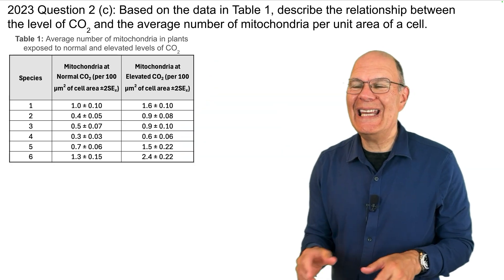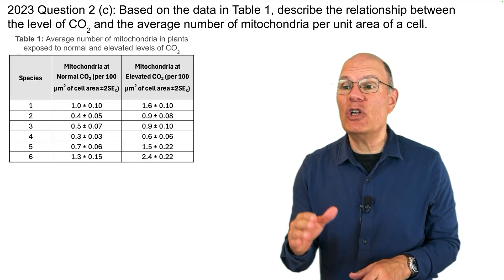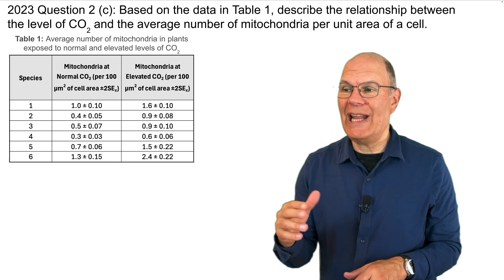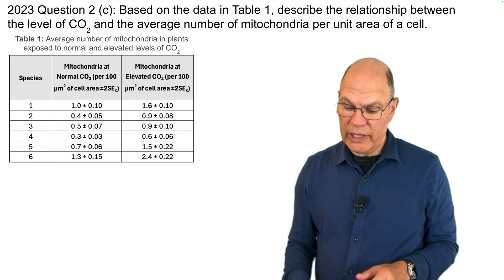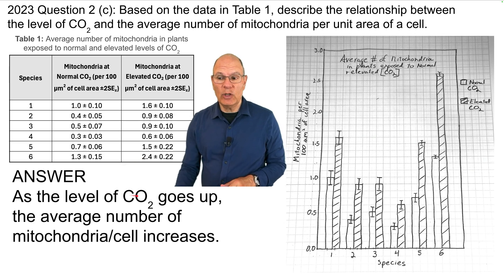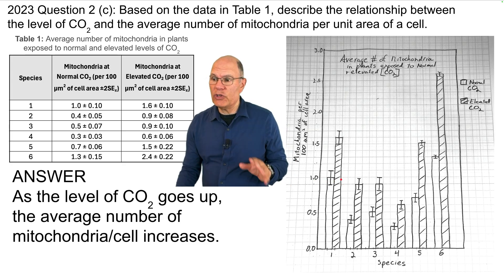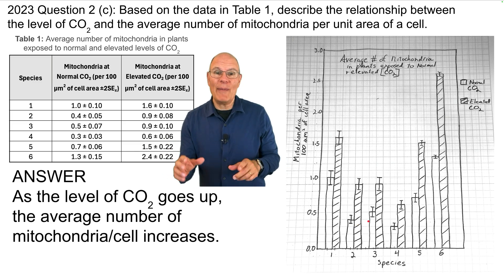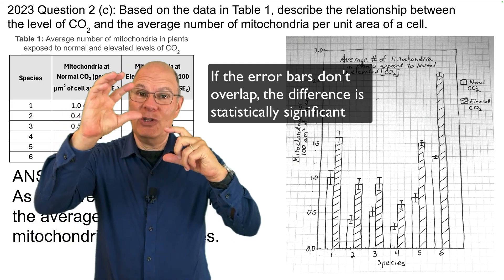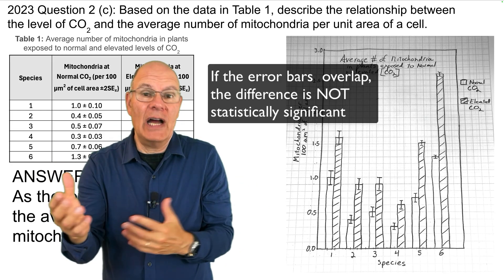Question 2C: based on the data in table one, describe the relationship between CO2 level and the average number of mitochondria per unit area of a cell. Here's the answer: as CO2 level goes up, the average number of mitochondria per cell increases — you see that in every species. From the graph, this is a significant difference in every single species. Remember, if the error bars don't overlap, the difference is significant; if they do overlap, it is not significant.